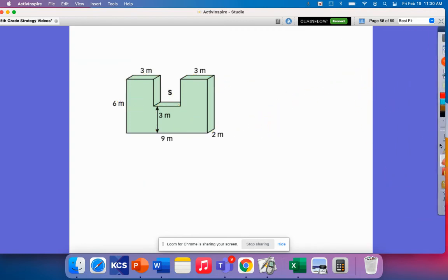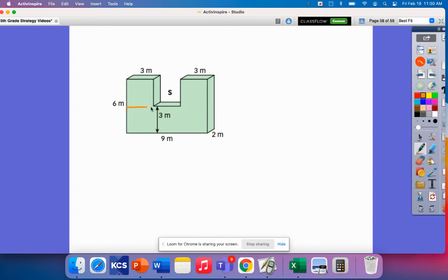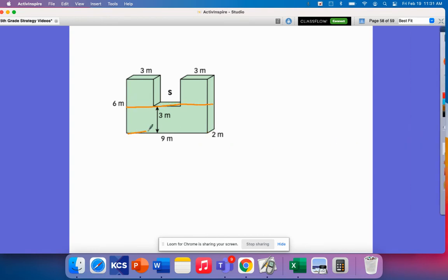Let's say that we wanted to break it apart across. So I have nine, I have two, I know that this is three. So from here to here would be three. This is the other three. So I have a three by nine by two. Three times nine is twenty-seven and twenty-seven by two, fifty-four meters cubed.